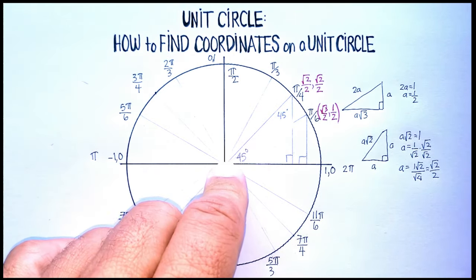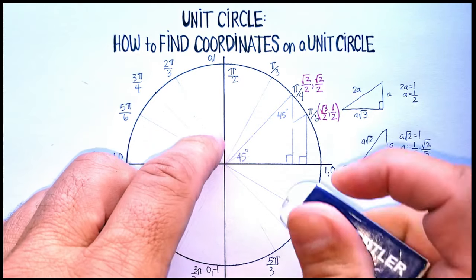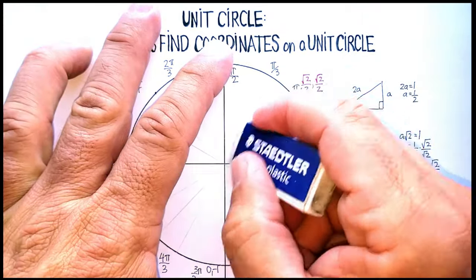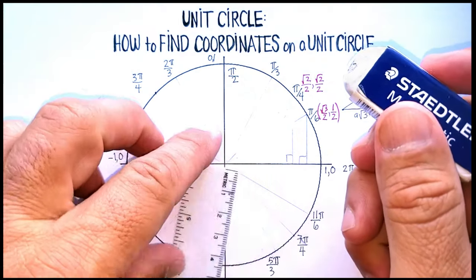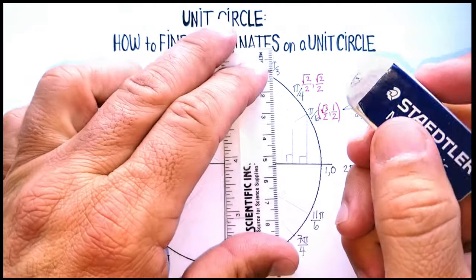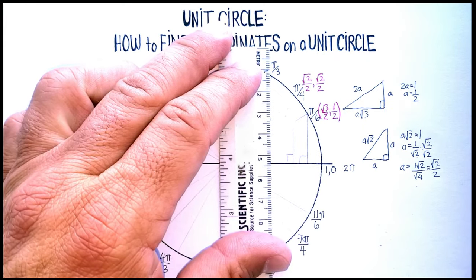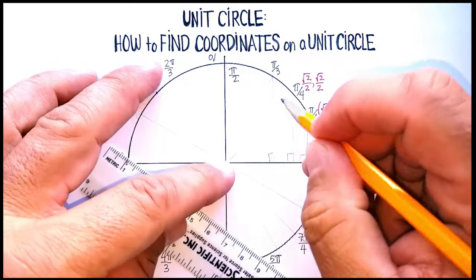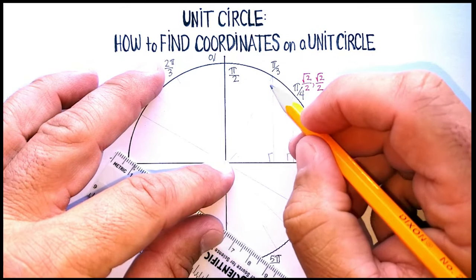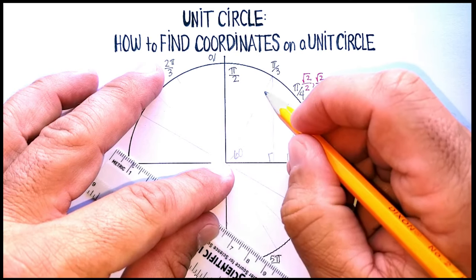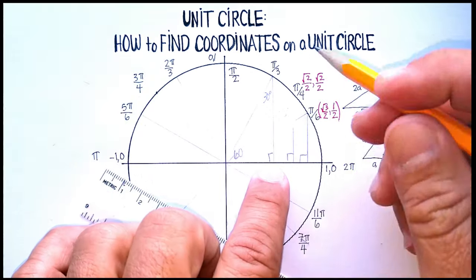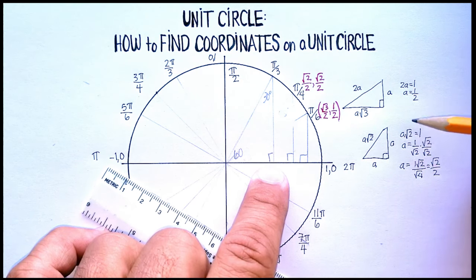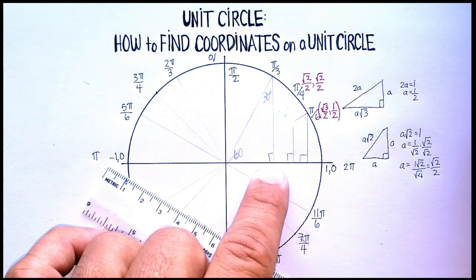Now I've shown you those two coordinates. You can do the same thing for every single triangle after that. Starting at pi/3 — drop a straight line down; you'll have a 60-degree triangle, a 30-60-90. I want you to find the coordinate for pi/3 using the same information we worked out here. I hope that was helpful.